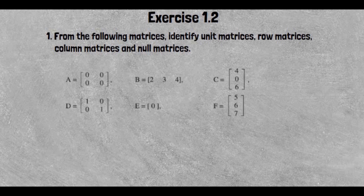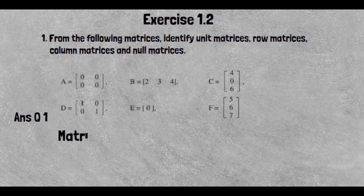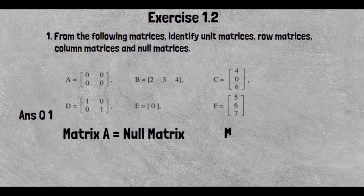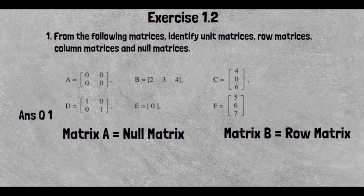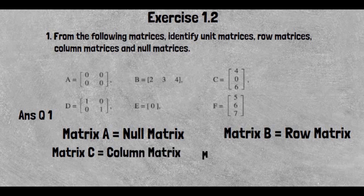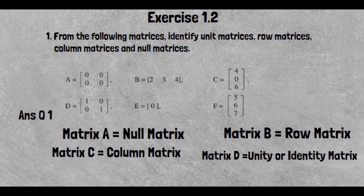Let's start with the answer to Question No. 1. Matrix A is a null matrix. Matrix B is a row matrix. Matrix C is a column matrix. Matrix D is a unit matrix, also called an identity matrix. Matrix E is a zero matrix (null matrix).